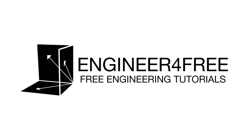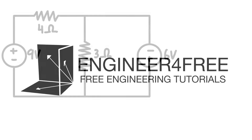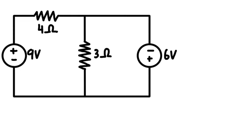We're back again with another example on Kirchhoff's voltage law. What we want to do is find out what the voltage drops across each of these resistors are, and then we can confirm that we've got everything right at the end by using Kirchhoff's current law and checking that the current going in and out of each junction is summing to zero.